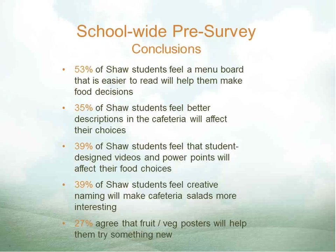We also did a school-wide pre-survey to assess student perception of how different marketing approaches could help them decide what to eat. Last year in April, school secretaries distributed our brief questionnaire to students in all classrooms. We received 353 surveys, representing about 77% of the student body. Our main findings showed that more than half of the students thought an easier-to-read menu board would help them select what to eat, and between 35 and 39% of students supported better descriptions of foods, student-designed videos, and creative salad names.